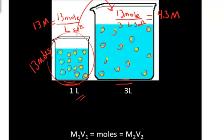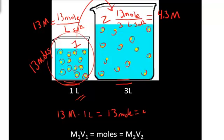Because of this, we have a relationship between the molarity. Let's call this beaker 1 and this beaker 2. The molarity of beaker 1 is 13 molar, and if we multiply it by the volume of beaker 1, it's 1 liter. That equals 13 moles, which is also equivalent to molarity of 2, which is 4.3 molar, times volume of 2, which is 3 liters.